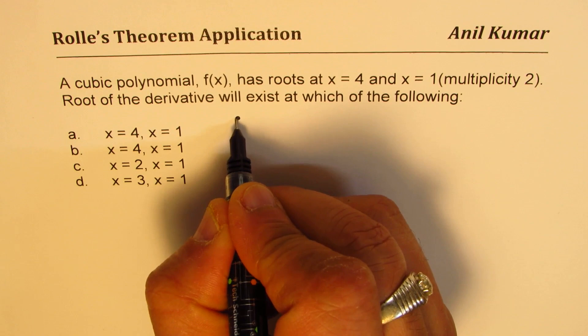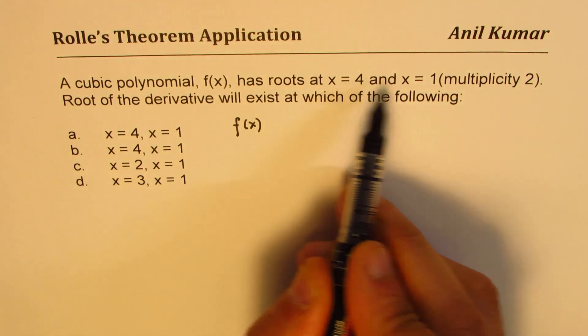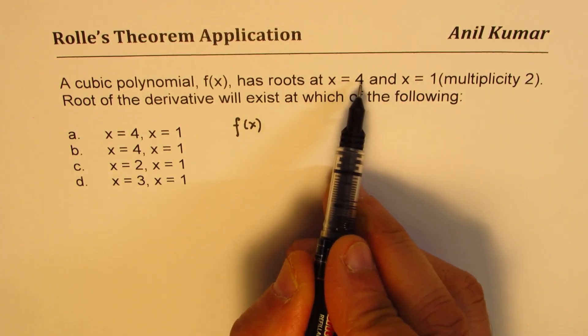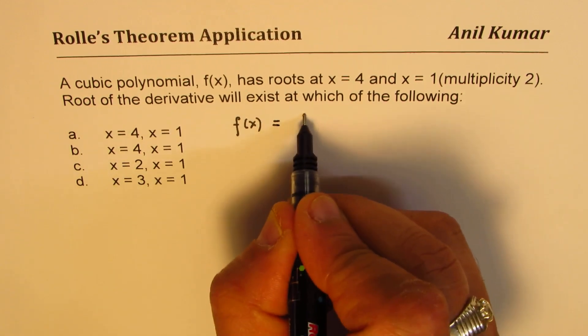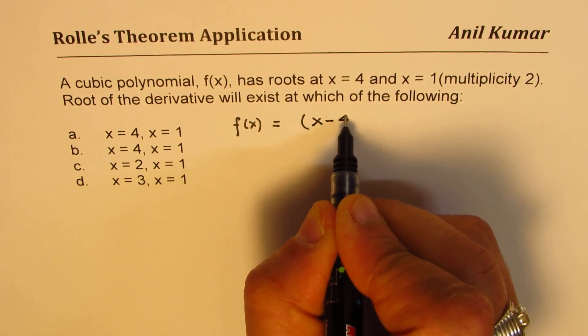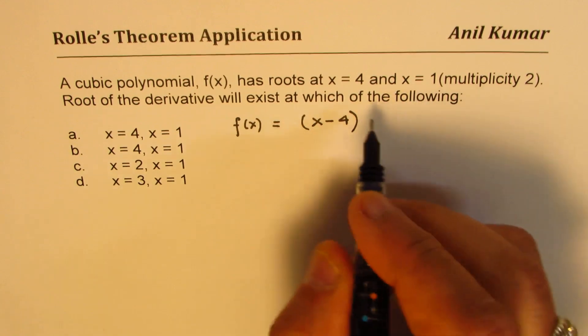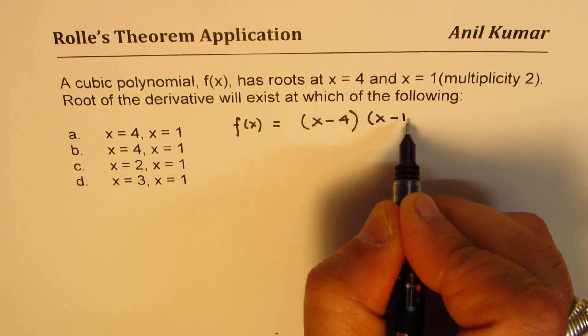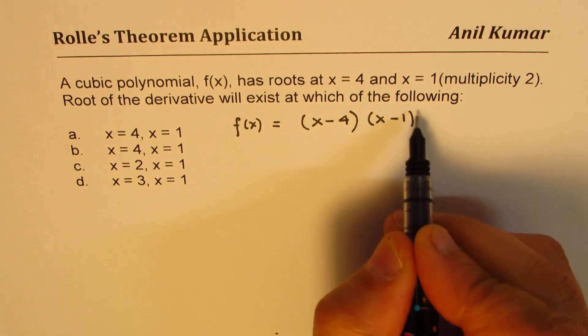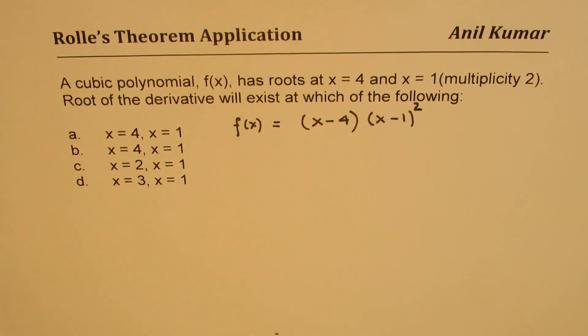So we are given the function f(x) which has two roots. One is at x equals 4, that means the factor should be x minus 4, and at x equals 1 so the factor is x minus 1. Multiplicity 2 means this is to the power of 2.